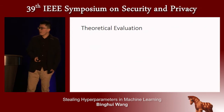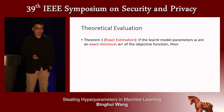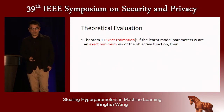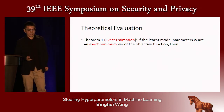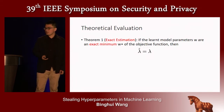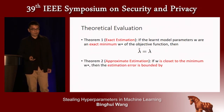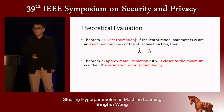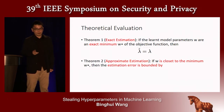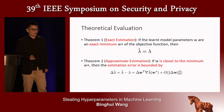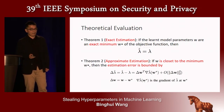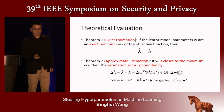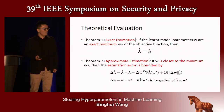For theoretical evaluation, Theorem 1 is an exact estimation result: if the learned model parameters are an exact minimum of the objective function, then the estimated hyperparameter value equals the true hyperparameter value. Theorem 2 covers approximate estimation: if the model parameters are close to the minimum, the estimation error is bounded. Specifically, delta-w is the difference between the learned and true model parameters, and the estimation error delta-lambda is a linear function of this difference.